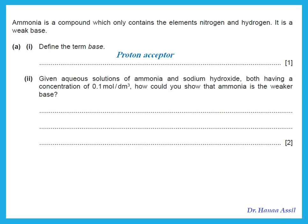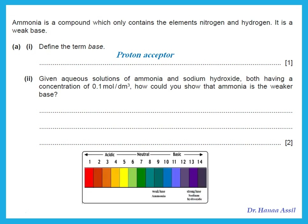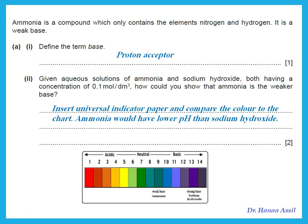Define the term base: a base is a proton acceptor. Given aqueous solutions of ammonia and sodium hydroxide both at a concentration of 0.1, how could you show that ammonia is the weaker base? Insert universal indicator paper and compare the color to the chart. The weaker base should have a lower pH. For example, ammonia would have pH 8, 9, or 10, while sodium hydroxide would have pH 11 to 14.